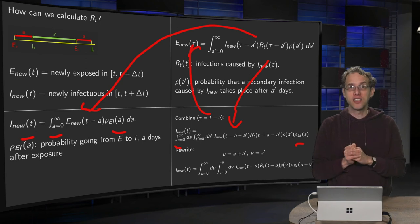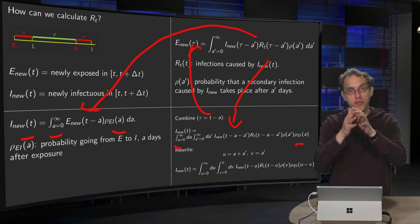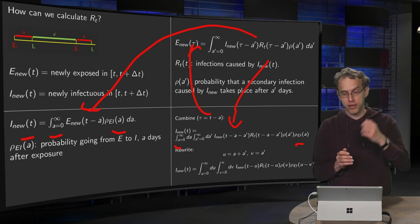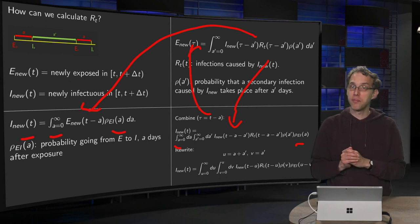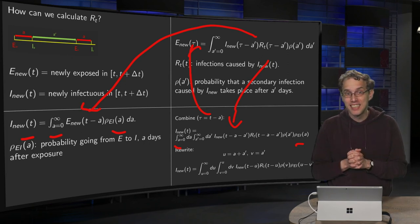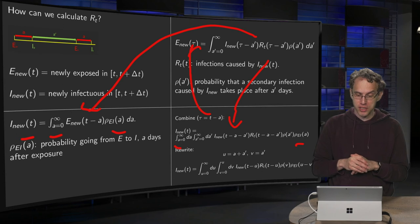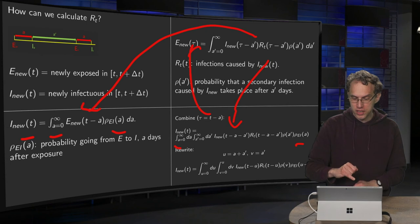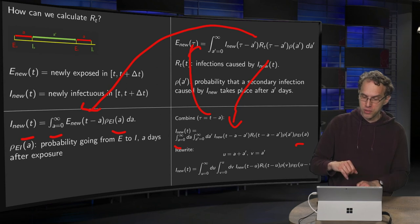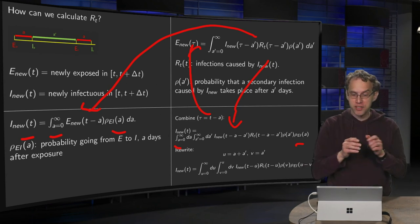We can rewrite this a bit by, we have a double integral of a and a prime, we can introduce new variables u and v, u equals a plus a prime, and v equals a a prime, in order to make the integral a bit easier, Jacobian of this transformation equals 1. We get new boundaries, the u going from 0 to infinity, and v from 0 to u.